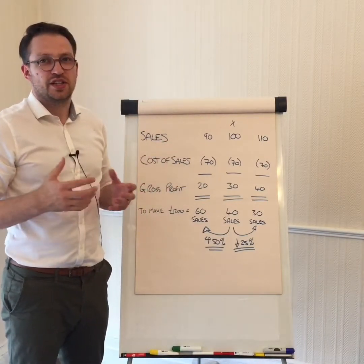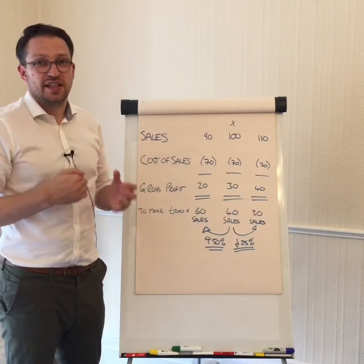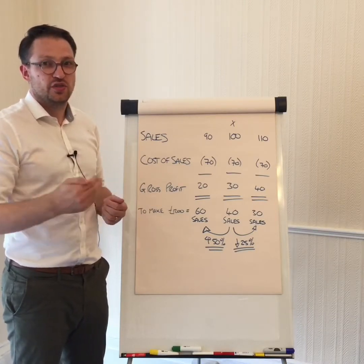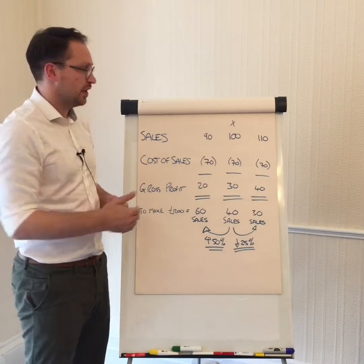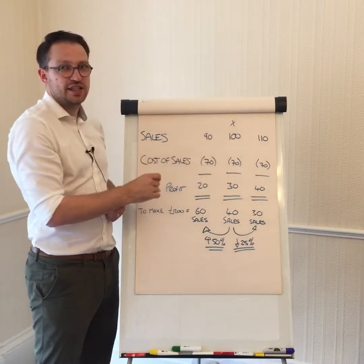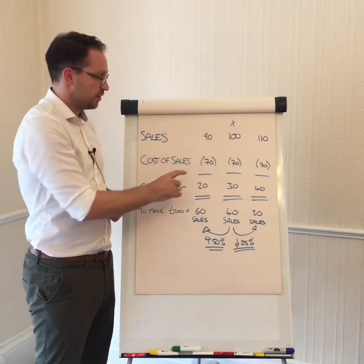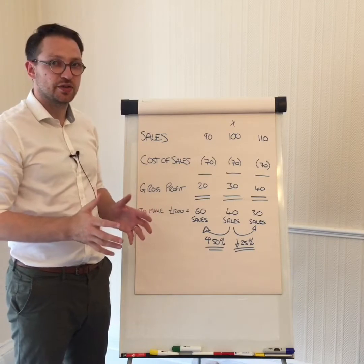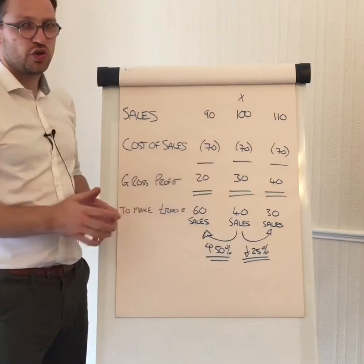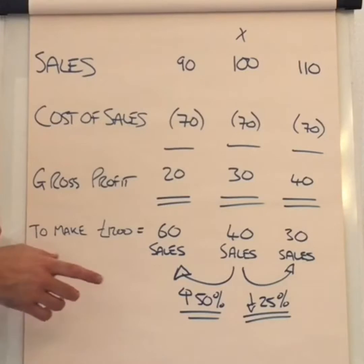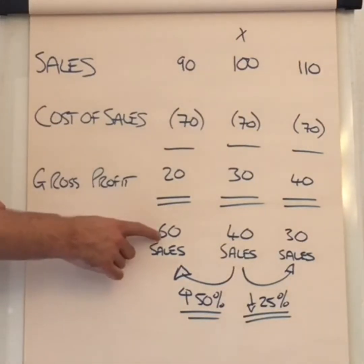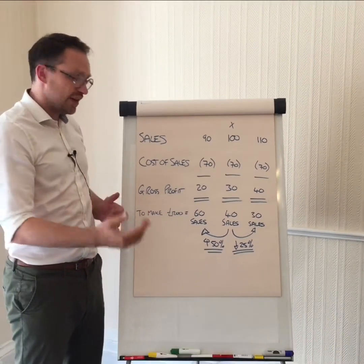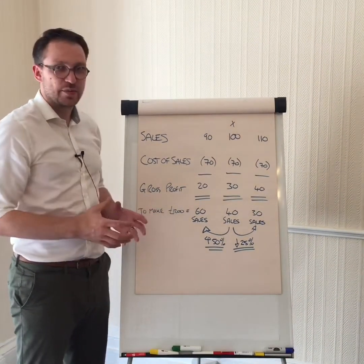A lot of businesses when they're starting up, or maybe they need to get cash in the door, they don't have enough belief in their product and the value, so they'll tend to drop the prices and might offer a discount. If we apply just a 10% discount, we've now got a £90 sales price. Our cost of sales hasn't changed — it's still £70 — so we've got a gross profit of £20 per unit. In order to make £1,200, we now need to make 60 sales, meaning you've got to work an extra 50% and generate another 50% in sales to make the same amount of money.